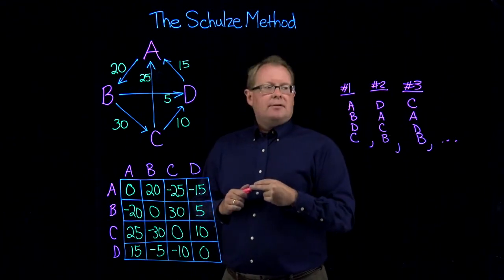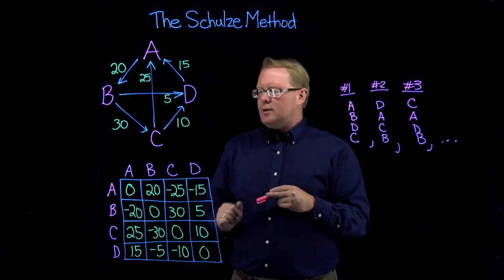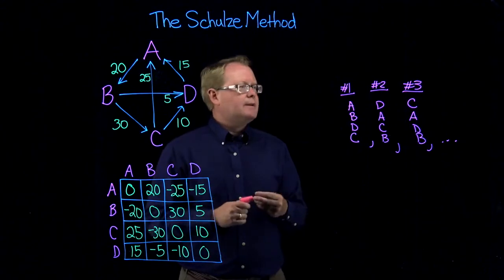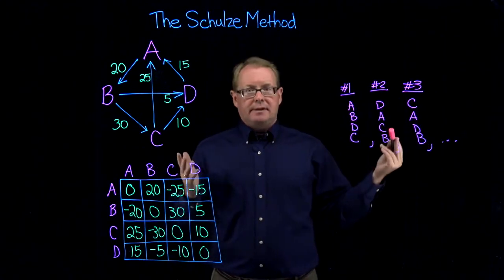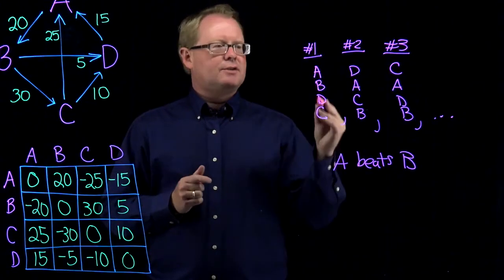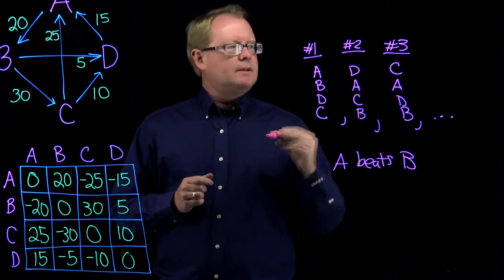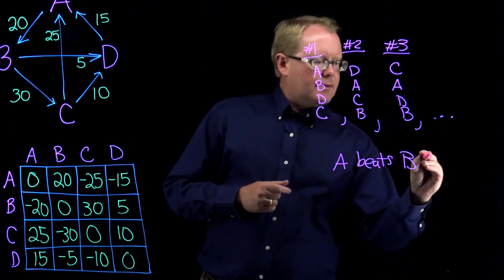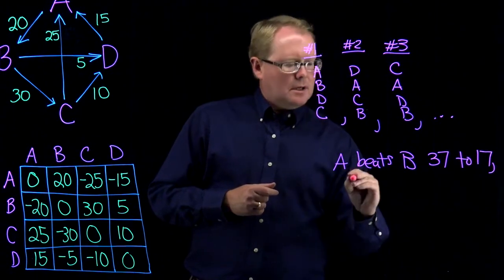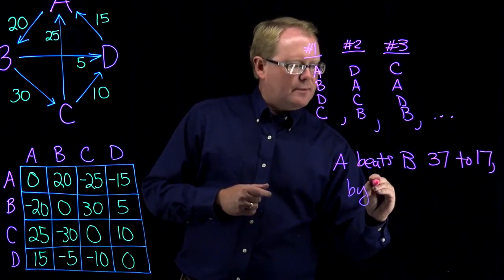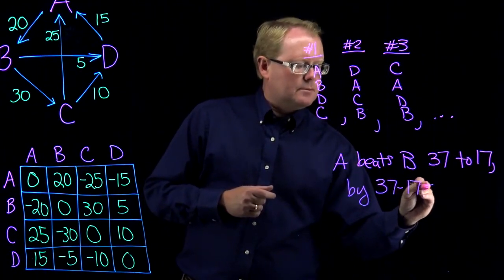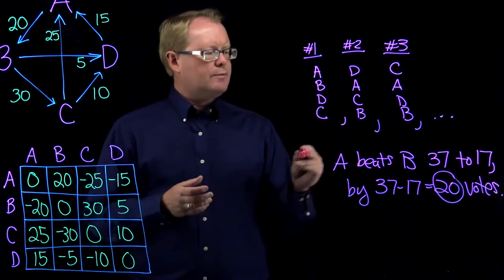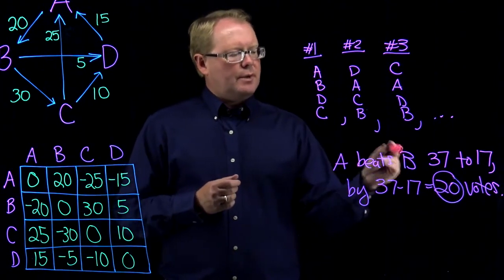How does the Schulze method work? First of all, it's based on the margin of victory matrix. This margin of victory matrix, which has its own video, is a fundamental concept that looks at all pairwise matchups. For example, you might look at all ballots and compare A versus B. In this example election, A beats B on the first, second, and third ballot. In total, let's suppose A beats B 37 to 17, which is by a total of 20 votes — 37 minus 17.